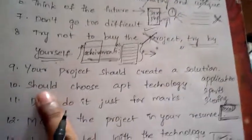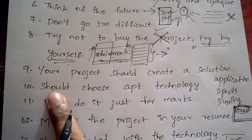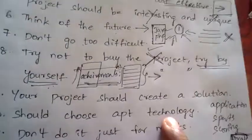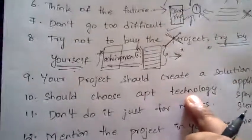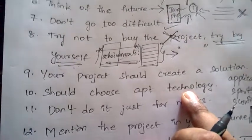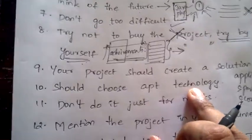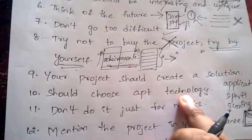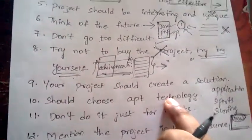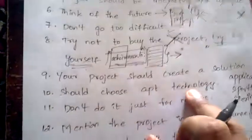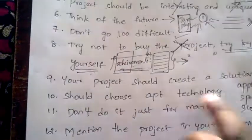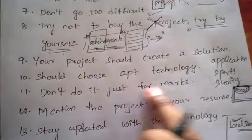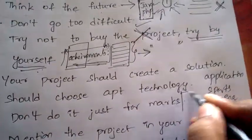Next, choose the apt technology. First try to know which technology is best suited for your project — Python, PHP, Java, C, or C++. Then decide the technology and start the project.